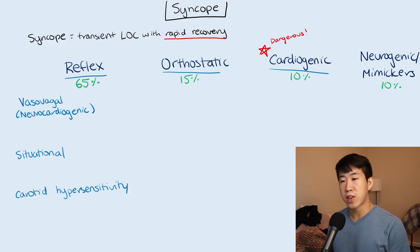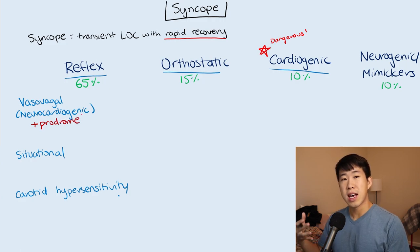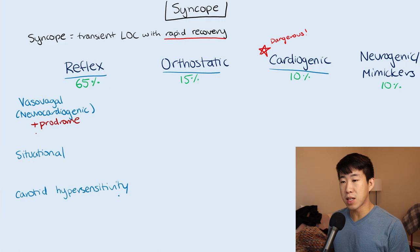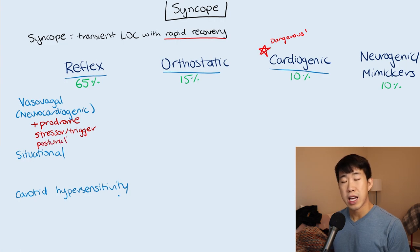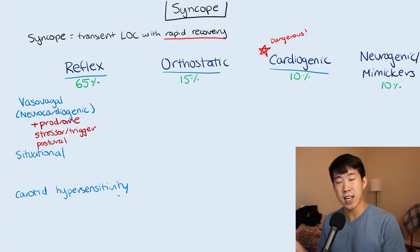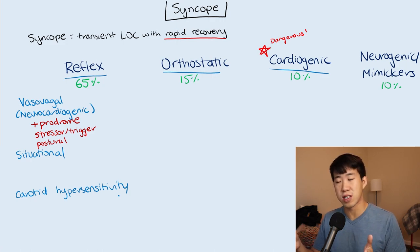For vasovagal syncope, there is usually a very clear prodrome. The patient will report a sensation of flushing, warmth, and maybe some diaphoresis prior to passing out. This is very reassuring and suggestive of vasovagal syncope. It's usually induced by some kind of stressor or clear trigger, and it's often postural — the patient is standing for a prolonged period, 15 to 20 minutes, gets the prodrome, then faints. Vasovagal syncope typically recurs throughout their lifetime with consistent, recognizable triggers.